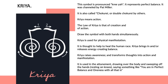The Kriya Symbol. This symbol is pronounced Kriya. It represents perfect balance. It is also called Chokure, or double Chokure. Kriya means action. The law of Kriya is that of creation and of action. Draw the symbol with both hands simultaneously. Kriya is used for physical manifestation. It is thought to help to heal the human race.